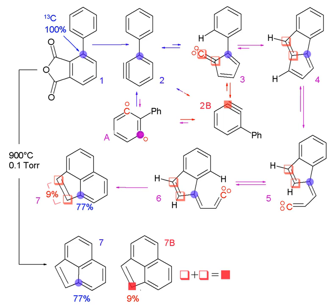The nuclides used in isotopic labeling may be stable nuclides or radionuclides. In the latter case, the labeling is called radiolabeling. In isotopic labeling, there are multiple ways to detect the presence of labeling isotopes: through their mass, vibrational mode, or radioactive decay.